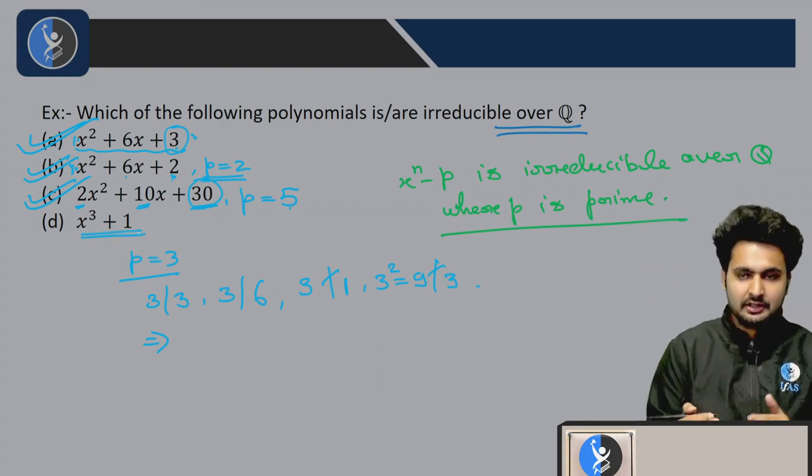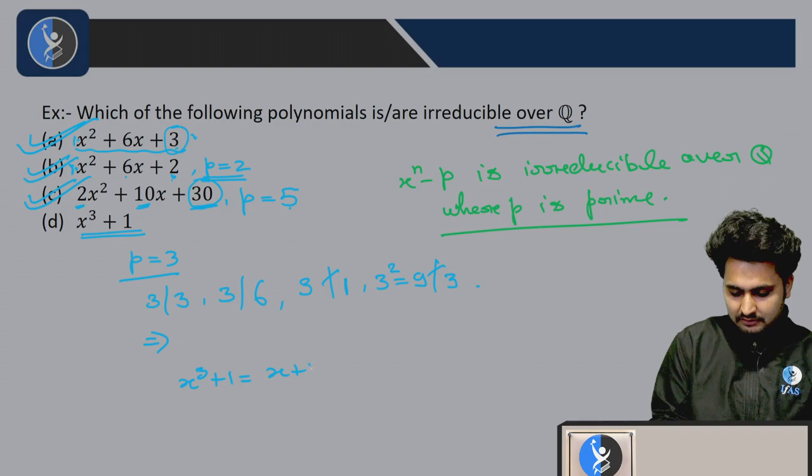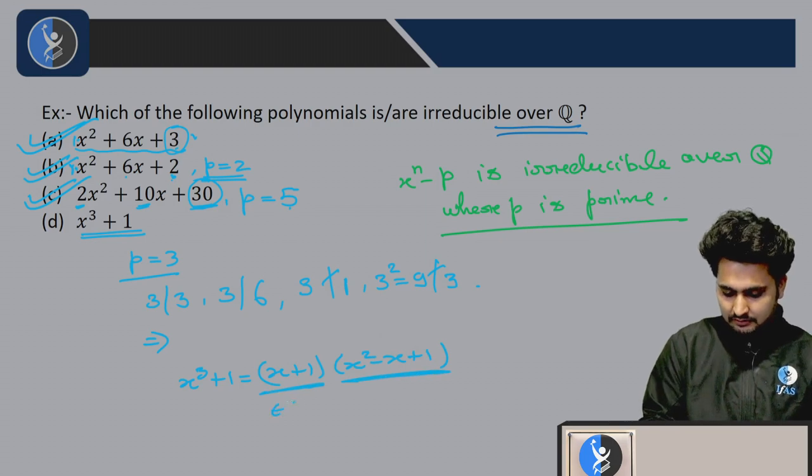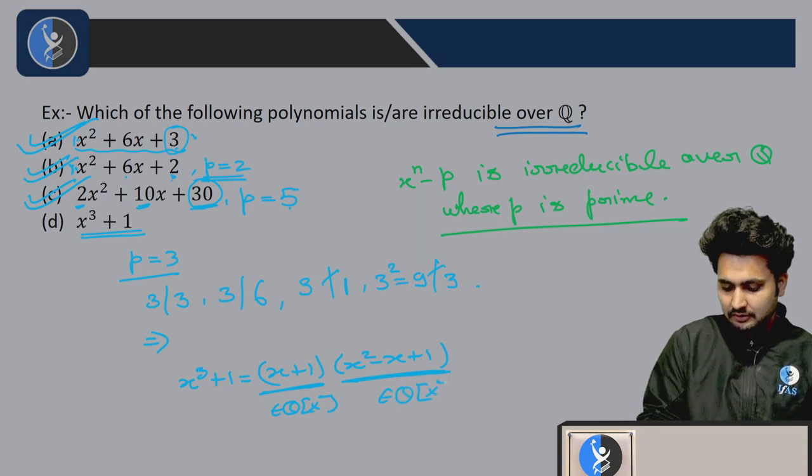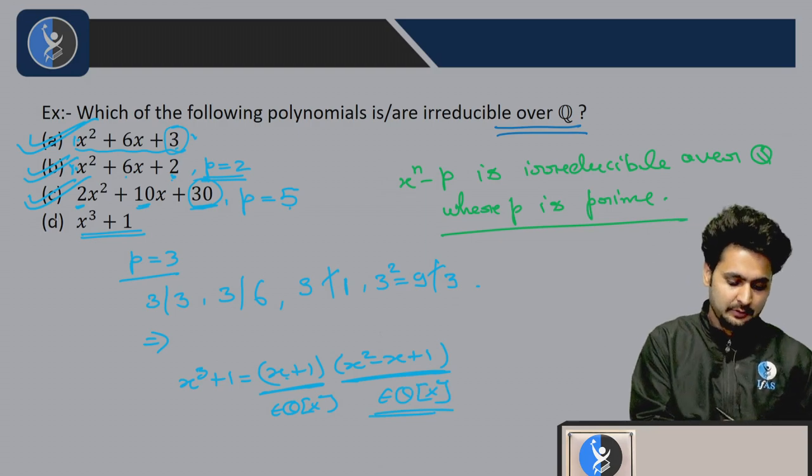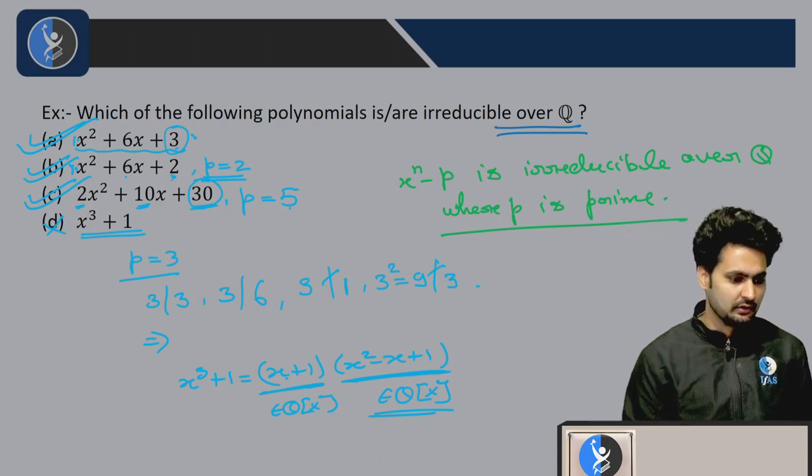But if you talk about option d, x cubed plus 1 equals x plus 1 into x squared minus x plus 1. It breaks into factors. These are also polynomials inside Q[x], so this will be discarded.